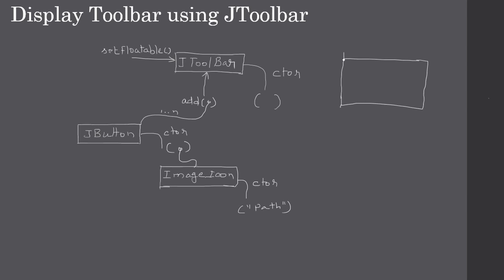The setFloatable method is useful to move the toolbar wherever you want. Say this is our frame window - you can have the toolbar anywhere you want with the floatable property. With setFloatable you can move the toolbar and place it towards the right, or dock it wherever you want - towards the top or bottom. When setFloatable is set to true, you can float the toolbar towards the edge and dock it wherever you want.